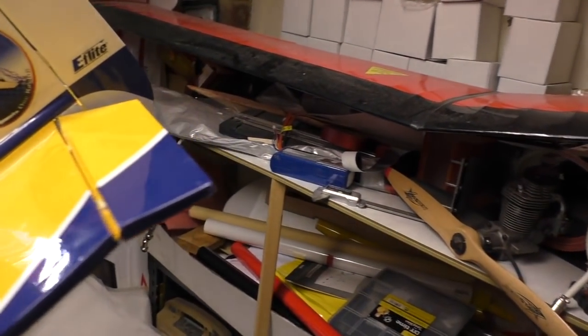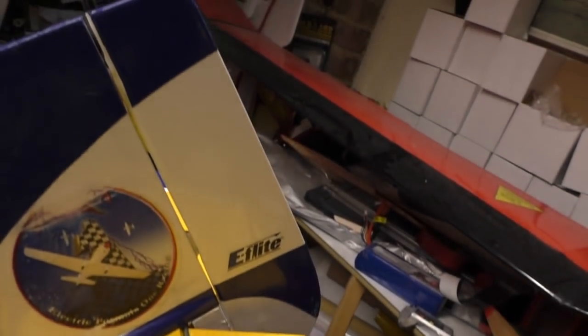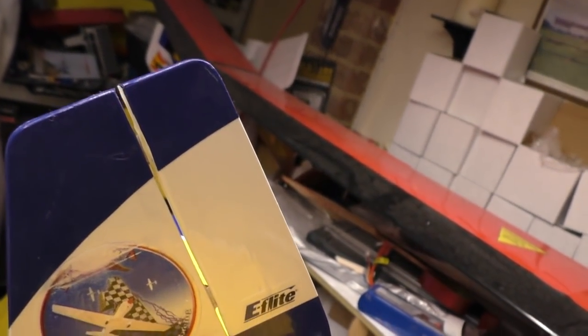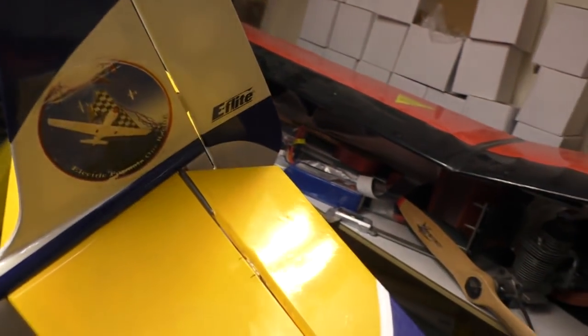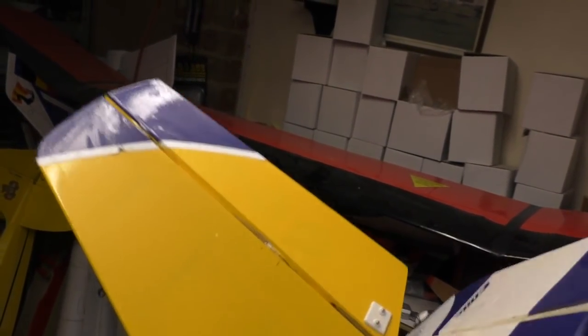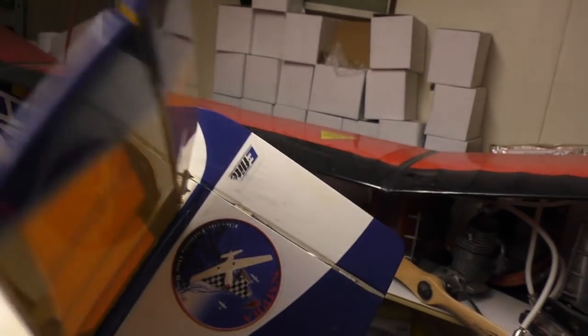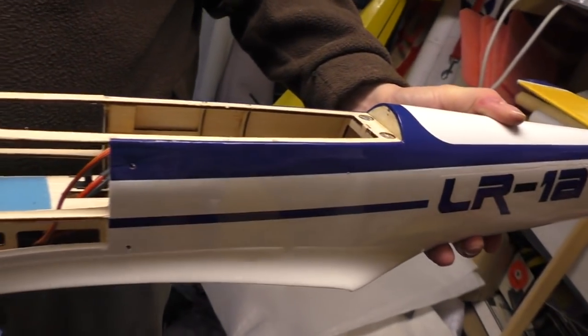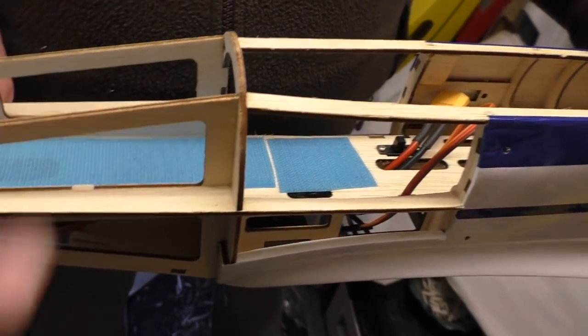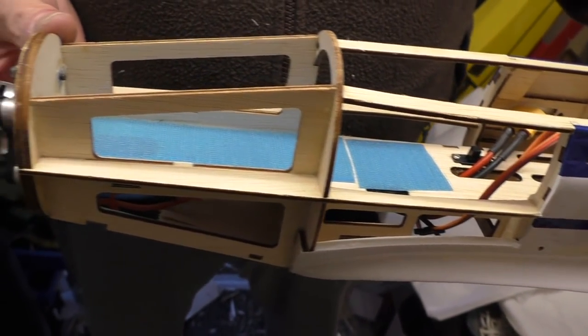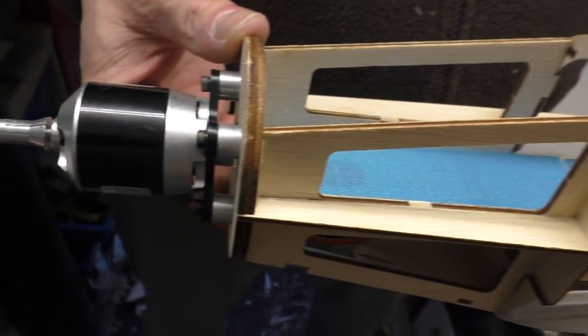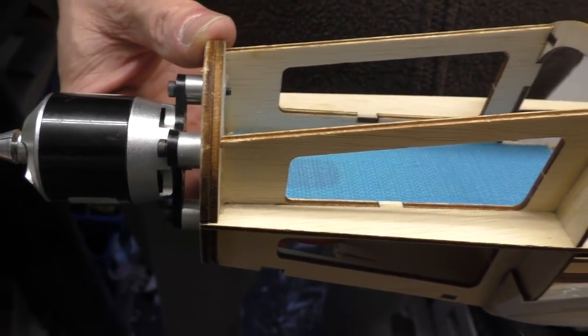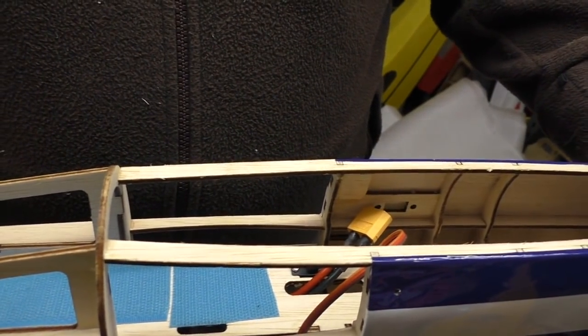Right, we've replaced the hinges in the tail. That was a job cutting them out. With proper hinges, which is good. So that is all done. What else have we done? Oh this was broken here and we just glued that back. Motor was a little bit loose wasn't it Pete? So Pete did that up.